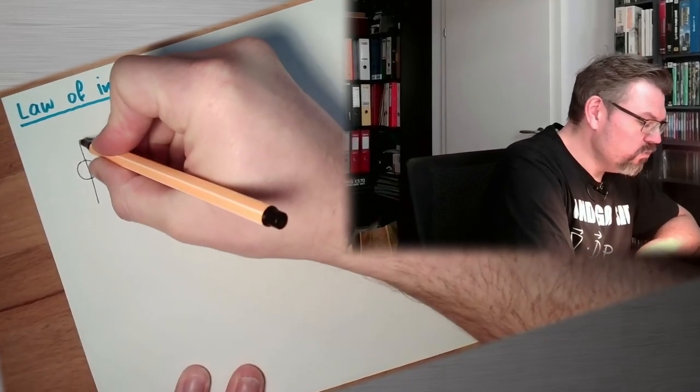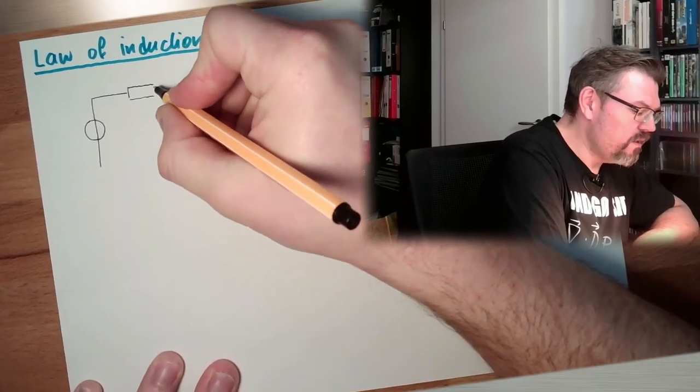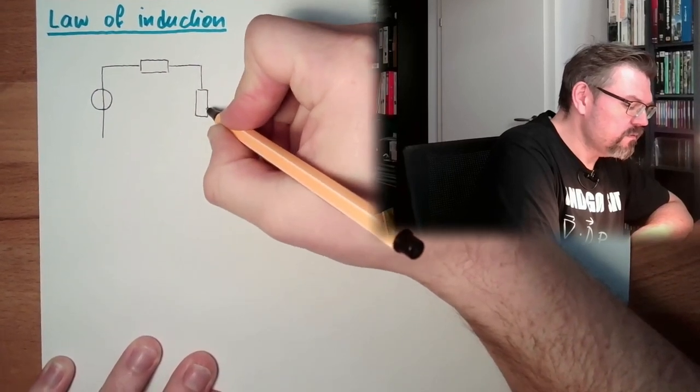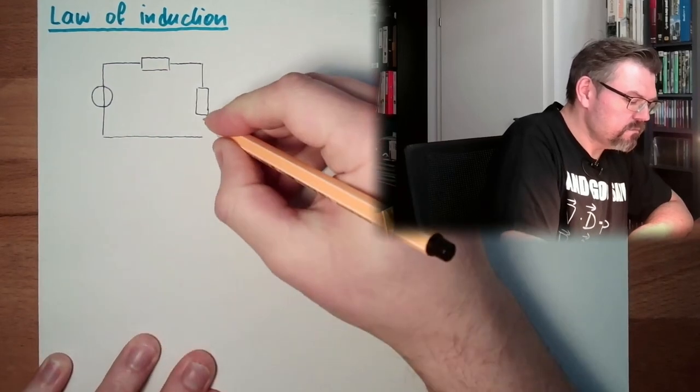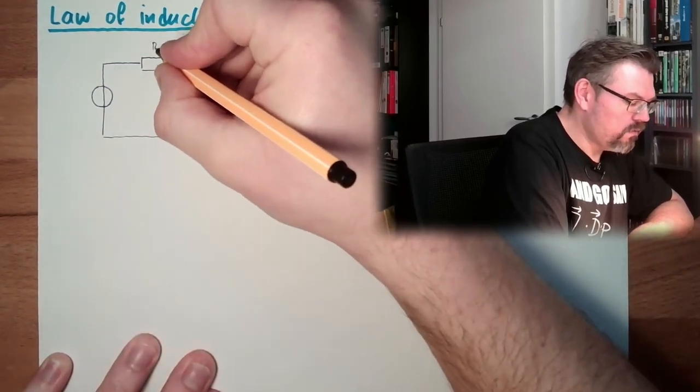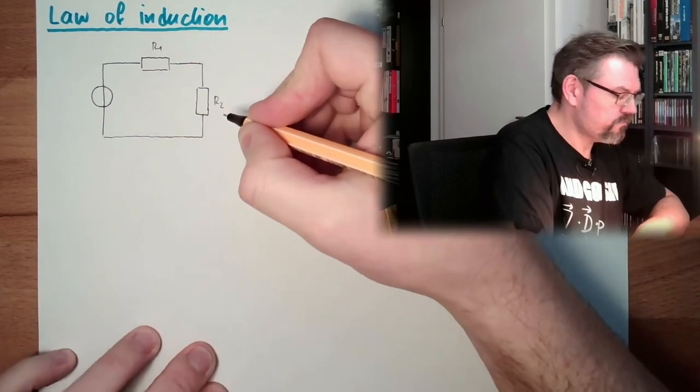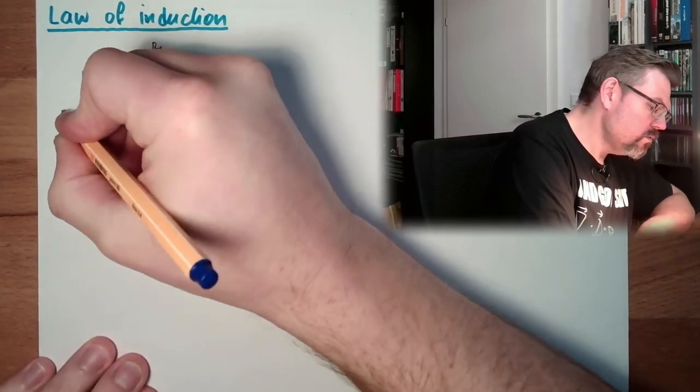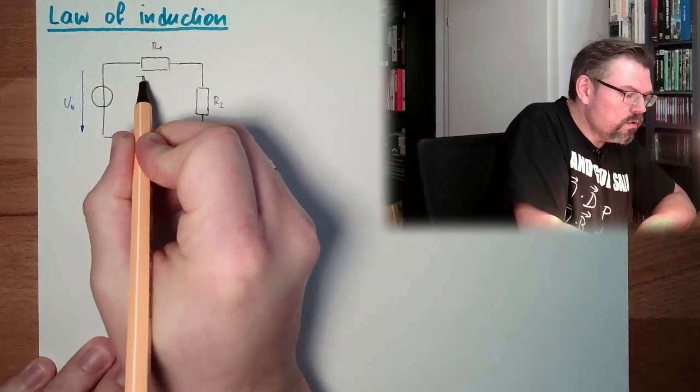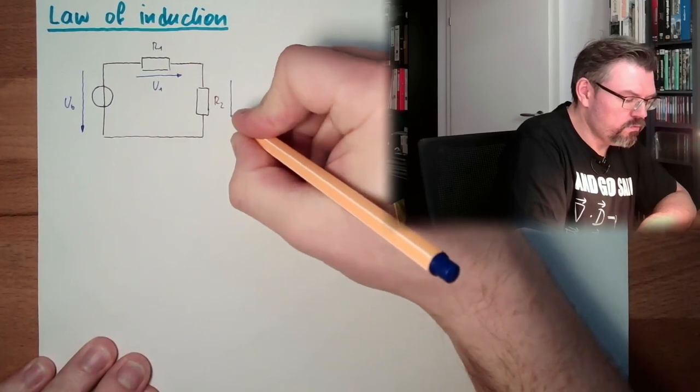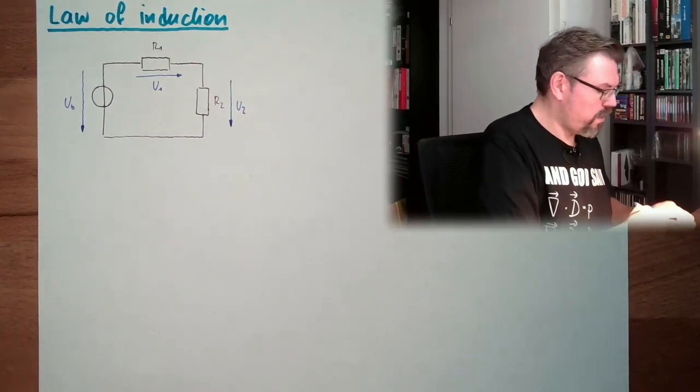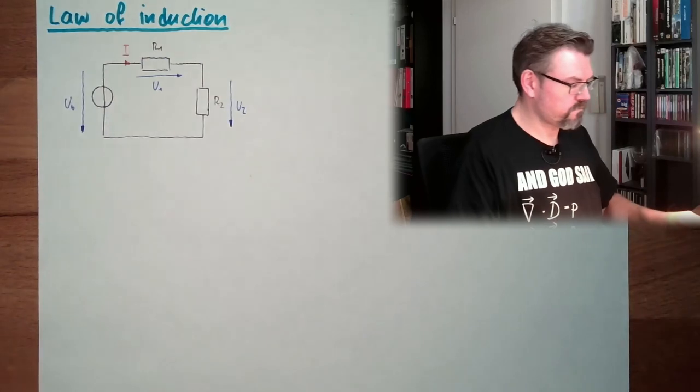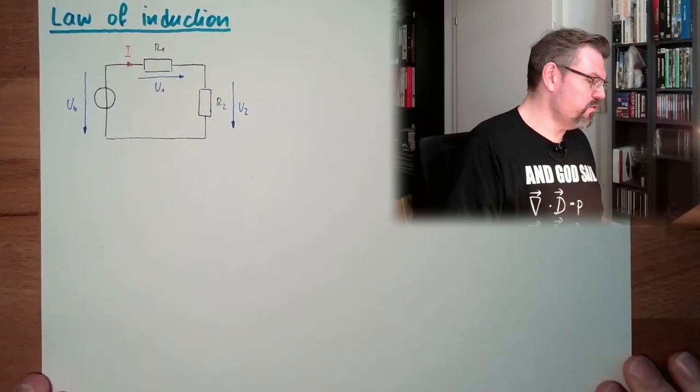So we have here a voltage source. We might have here some resistors. We have an R1, we have an R2. Then we have our voltages U0, U1, U2. We have a current here. Of course, there is a voltage, there is a current I. This was a typical loop.